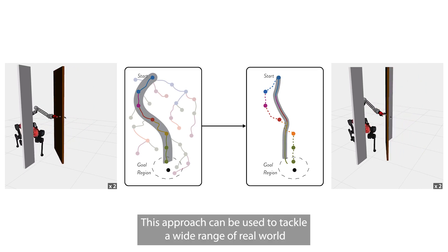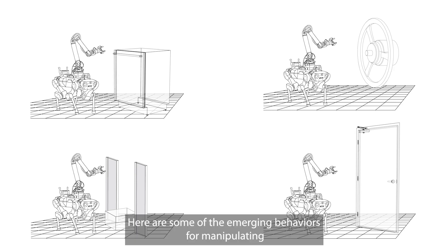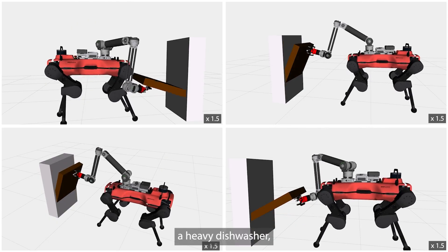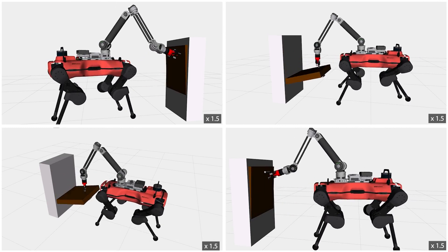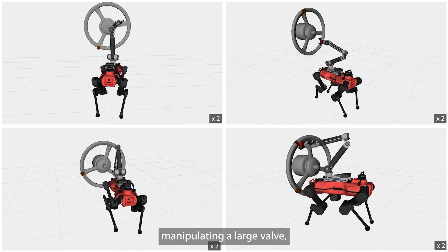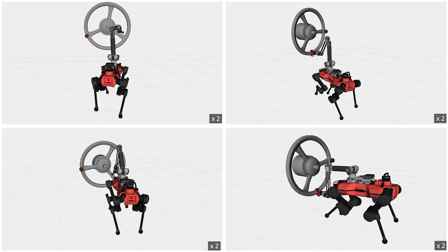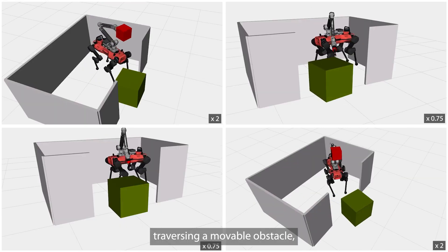This approach can be used to tackle a wide range of real-world tasks involving both prehensile and non-prehensile interaction phases. Here are some of the emergent behaviors for manipulating a heavy dishwasher, manipulating a large valve, and traversing a movable obstacle.